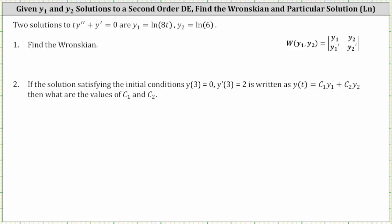Two solutions to t times y double prime plus y prime equals zero are y sub one and y sub two. We're asked to find the Wronskian, and then if the solution satisfying the initial conditions y of three equals zero and y prime of three equals two is written in the form shown here for y of t, what are the values of c sub one and c sub two?